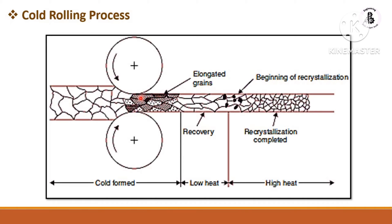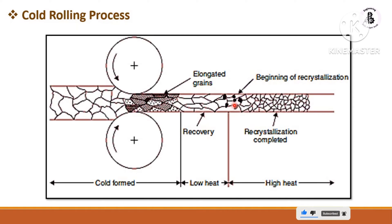As the material passes through the rollers, all the grains are in compression mode. After some travel, the material enters recovery mode. Due to the cold work, a low amount of heat is generated, and after moving from one end to another, the beginning of recrystallization starts. You will get a new crystal structure with cold working, and the material will have a good surface finish and good dimensional capacity compared to the hot working process.